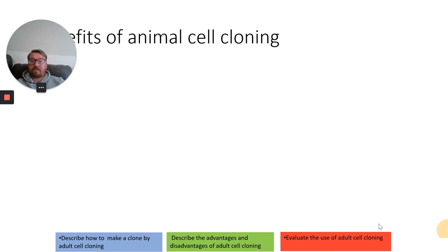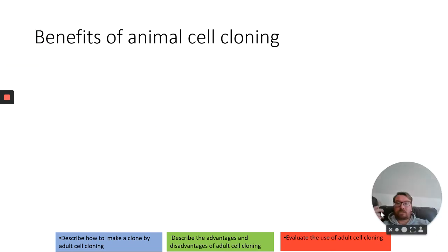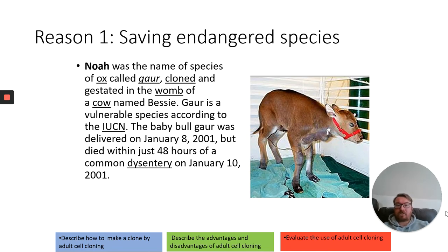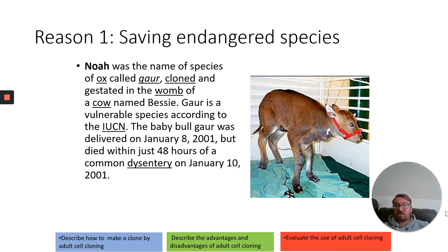Looking at some of the benefits of adult cell cloning. Number one — it allows us to save endangered species. Please record these reasons as we go through. For example, Noah was the name of a species of ox called a gaur; it was incredibly vulnerable, and through this technique they're looking at being able to reintroduce and save this endangered species.